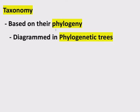Phylogeny, also in the key terms, is the evolutionary history and relationship of an organism or group of organisms. We're trying to name and organize things based on their evolutionary history. That's kind of abstract, but it becomes a lot less abstract when we actually diagram it. You can diagram the phylogeny of an organism in something called a phylogenetic tree — a diagram that reflects the evolutionary relationships among organisms or groups of organisms.